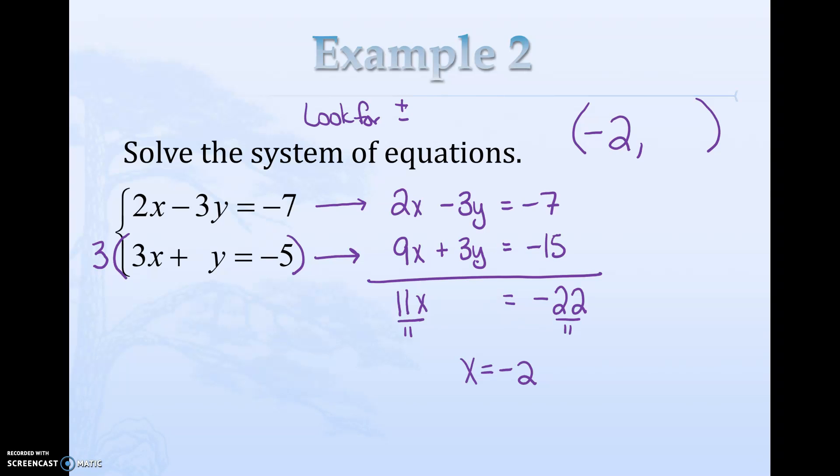Now that we know x is negative 2, we have basically three options. We could put it into the x right here but those numbers are kind of big. We could put it into the x in this original equation but I see a lot of negatives there and that's just kind of gross. So I am going to pick 3x plus y equals negative 5. 3 times negative 2, so instead of this x we're putting negative 2 in its place, 3 times negative 2 is negative 6.